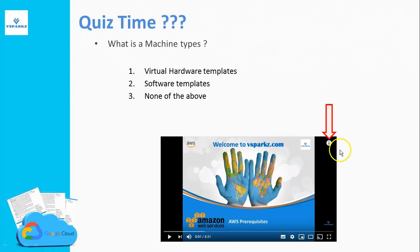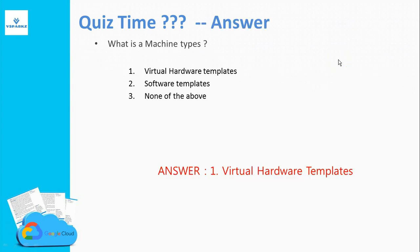Here is a quiz: what is a machine type? The options are: virtual hardware templates, software templates, or none of the above. The answer is number one — virtual hardware templates. Machine types are nothing but predefined or custom templates of virtual hardware.